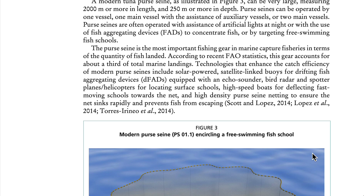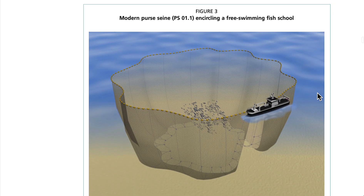Typically, the head rope is longer than the foot rope so as to reduce tension and prevent it from submerging, which can result in fish escaping over it. The purse seine is the most important fishing gear in marine capture fisheries in terms of quantity of fish landed. According to recent FAO statistics, this gear accounts for about a third of total marine landings. Technologies that enhance catch efficiency include solar-powered, satellite-linked buoys for drifting FADs equipped with echo sounders, bird radar, and spotter planes or helicopters for locating surface schools, high-speed boats for deflecting fast-moving schools toward the net, and high-density purse seine netting to ensure the net sinks rapidly and prevents fish from escaping.